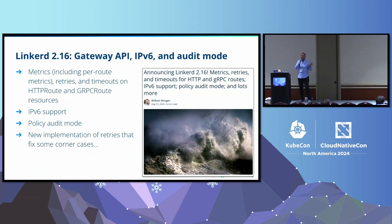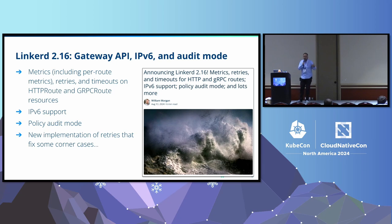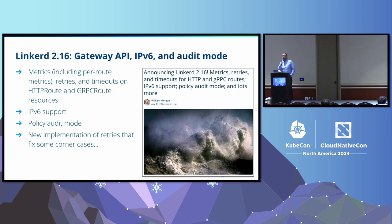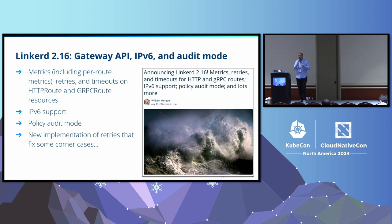Linkerd 2.16 came later, and if I'm being frank and transparent, this was kind of a cleanup release. We added IPv6 and a cool audit mode for policy. If you use authorization policies, you can turn those policies on and things might break — so we added an audit mode. But really the majority of effort was redoing our retries and timeouts logic, and also metrics including per-route metrics, to be on the native Gateway API types.